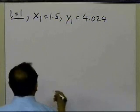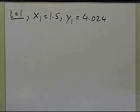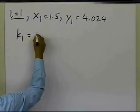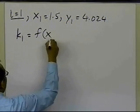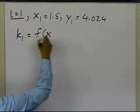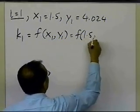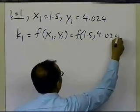and I'm going to use this to calculate my k1 and k2 values, and once I calculate my k1 and k2, I'll be able to calculate y2. So what is k1? k1 is the value of the function at xi, yi. Since i is equal to 1, it will be x1, y1, so that's the value of the function at 1.5 and 4.024.